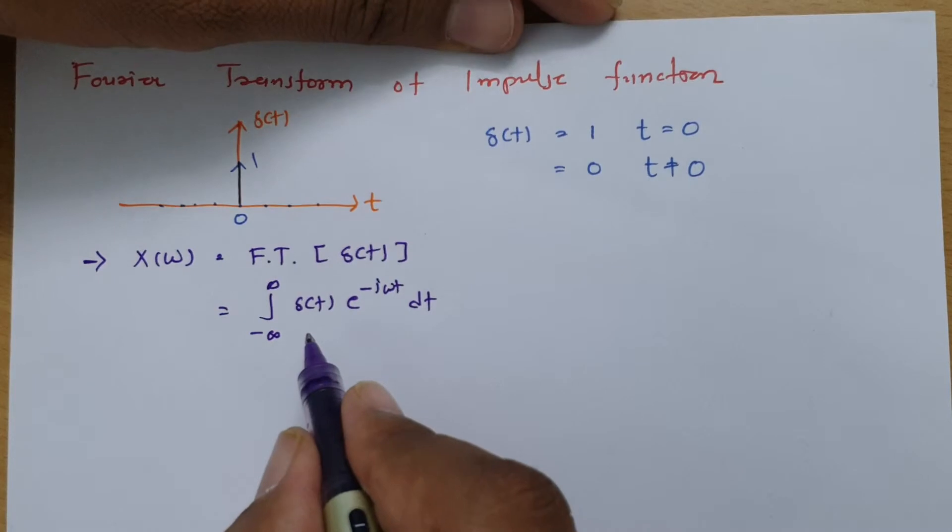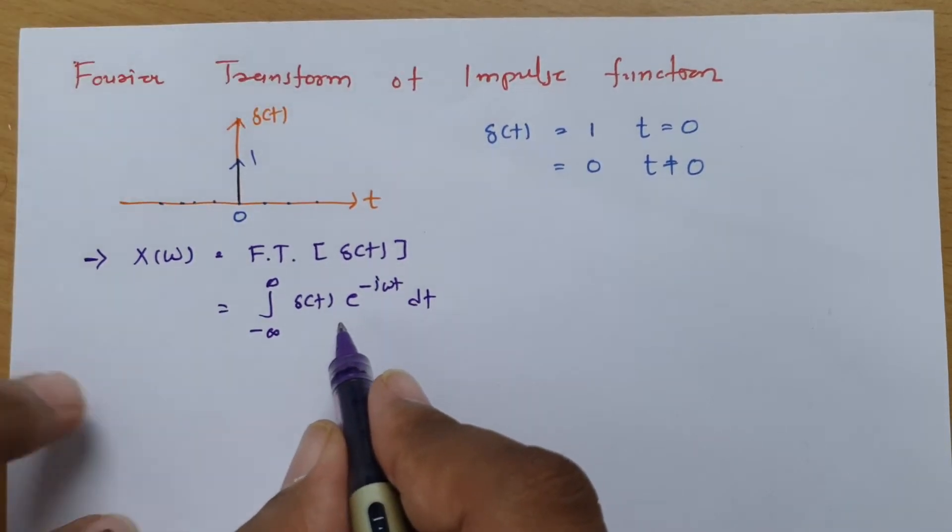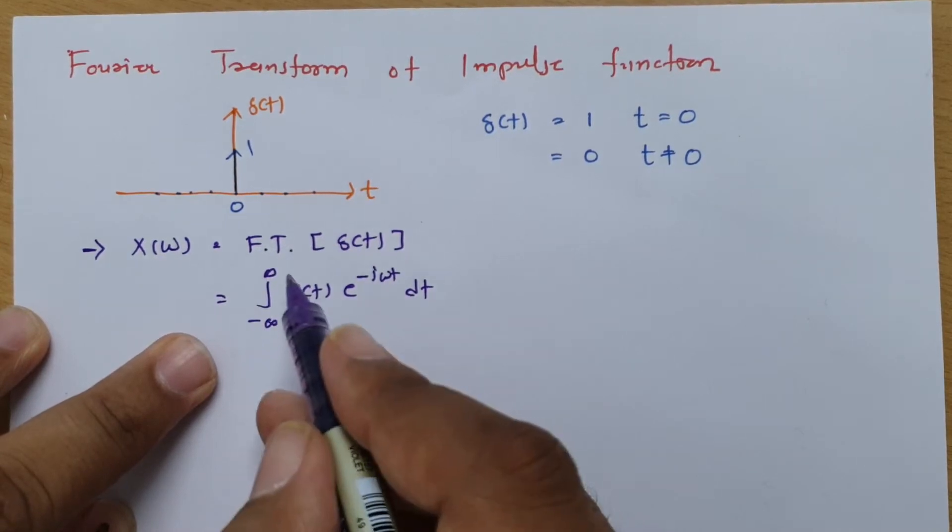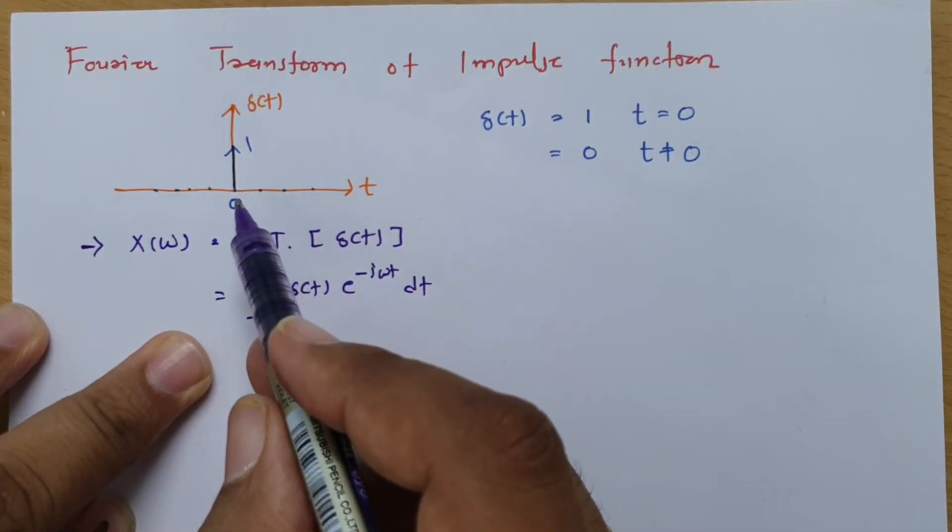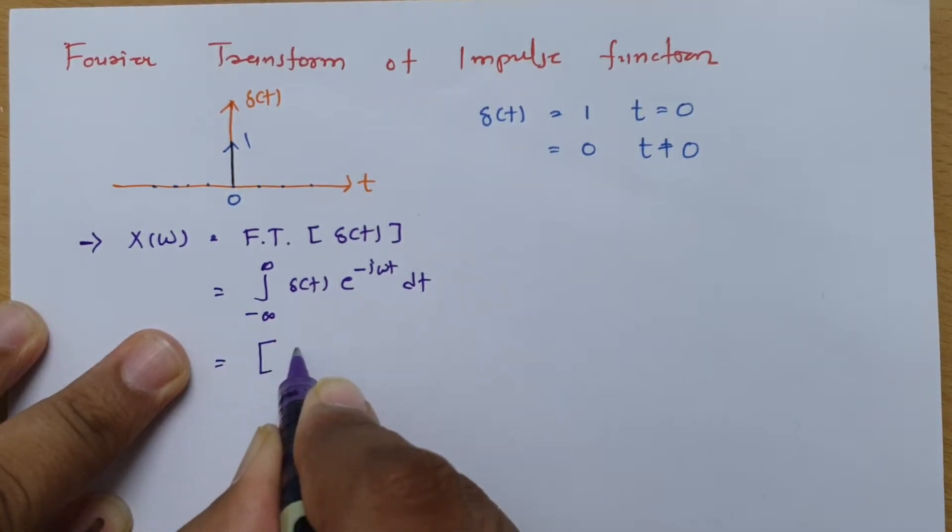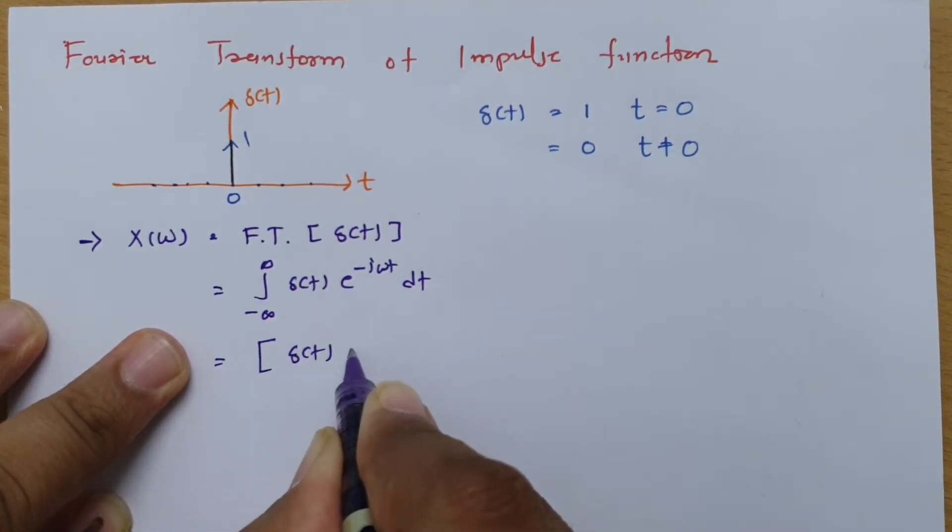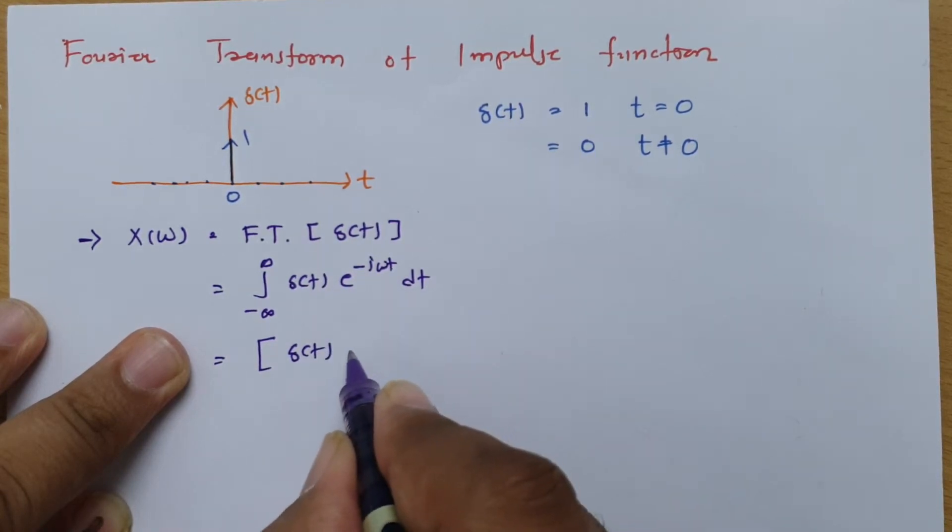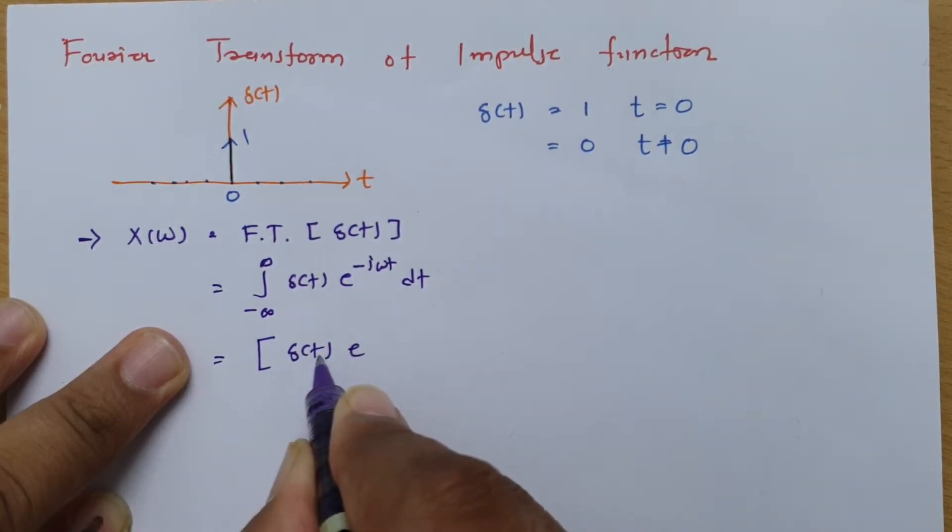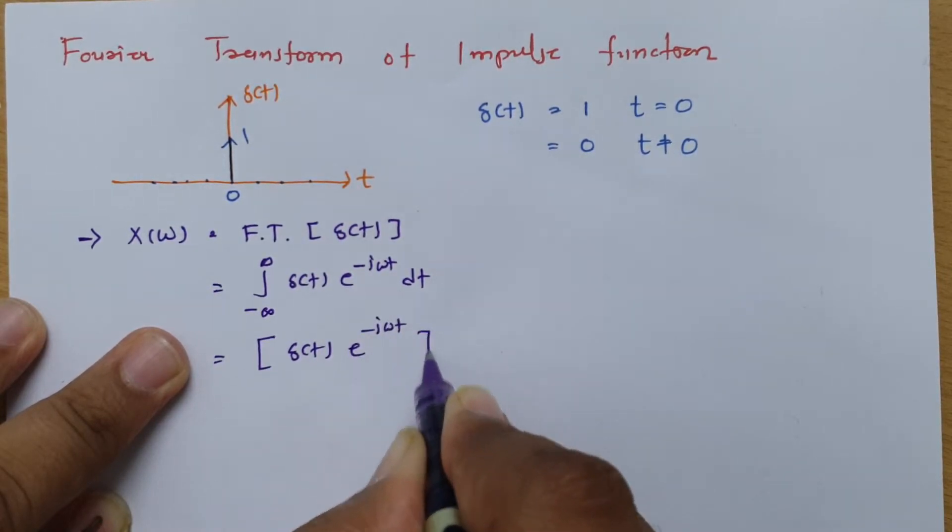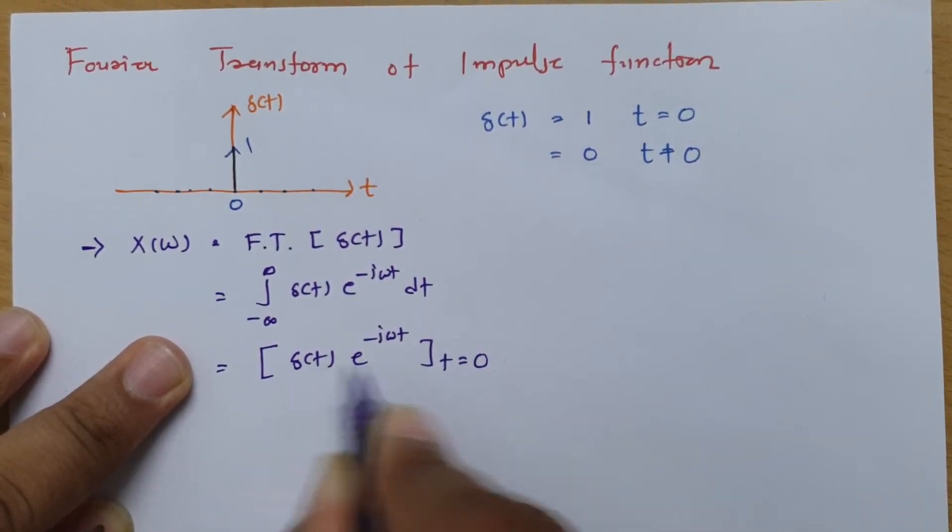Now see, when you have integration of impulse function delta t, you don't need to have limits as impulse is happening at t equals 0. So here, all we need to do is we just need to place value of this complete integration at t equals 0. So delta t into e to the power minus j omega t at t equals 0 we need to place.